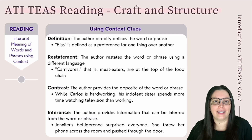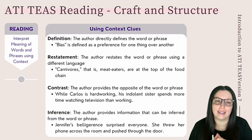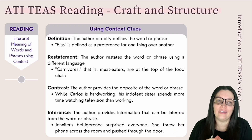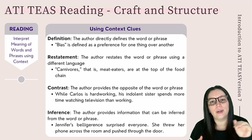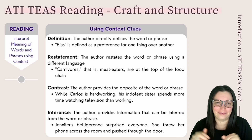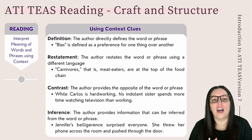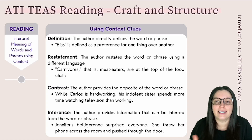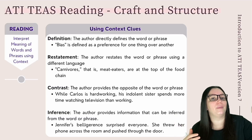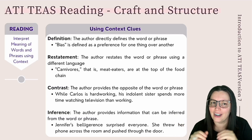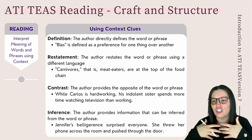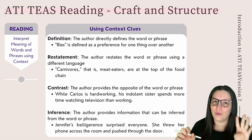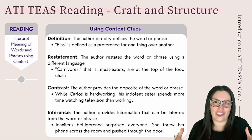Number three is contrast — the author provides an opposite of the word or phrase. For example, 'while Carlos is hardworking, his indolent sister spends more time watching television than working.' You can see the contrast: Carlos is hardworking and his sister is not. Number four is inference — the author provides information that can be inferred from the word or phrase. For example, 'Jennifer's belligerence surprised everyone — she threw her phone across the room and pushed through the door.' You can infer that belligerence means something like angry or aggressive.